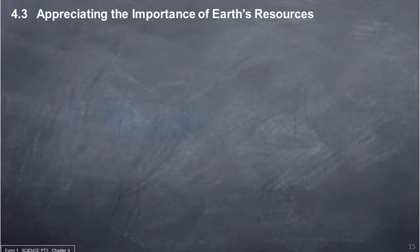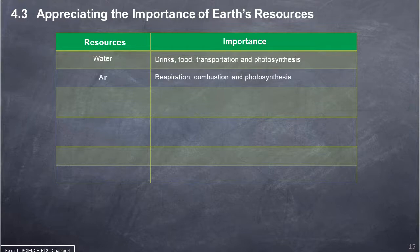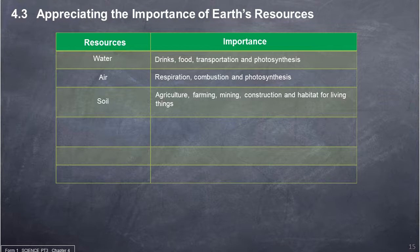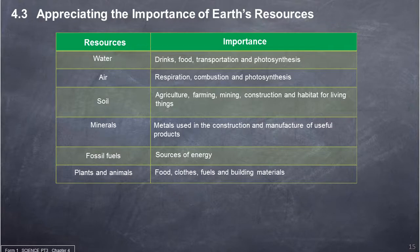4.3 Appreciating the importance of Earth's resources. Water is used in the preparation of drinks and food, transportation and photosynthesis. Air is used in respiration, combustion and photosynthesis. Soil is used in agriculture, farming, mining and construction, and as a habitat for living things. Minerals such as metals are used in construction and manufacture of useful products. Fossil fuels are sources of energy. Human beings obtain food, clothes, fuels and building materials from plants and animals.